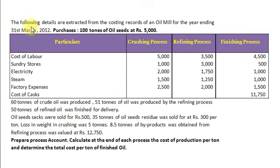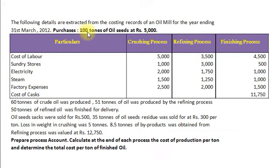The following details are extracted from the costing records of an oil mill for the year ending 31st March 2012. Purchases: 100 tons of oil seeds at Rs. 5000 per ton.